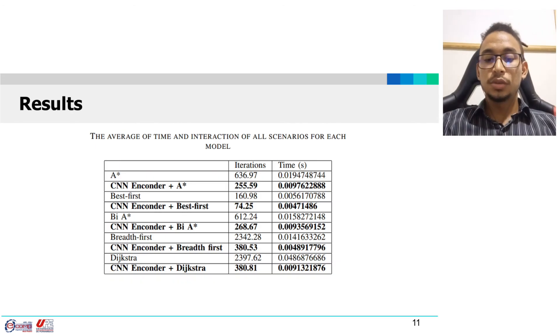The results show the CNN encoder combined with A-star was better than all compared algorithms.